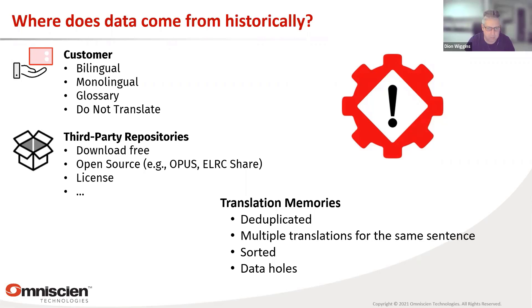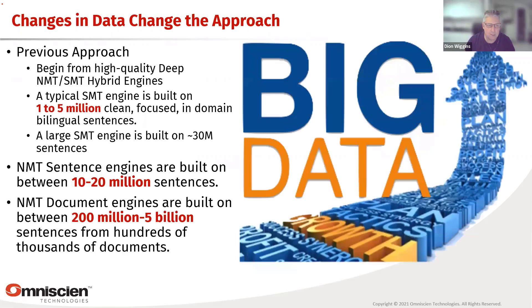Even translation management systems today don't keep things in the sequence they were originally in — they build them into a big body for quick lookup, not for document context. So there's a big problem with translation memories for new document-level translation. Philip explained document-level translation yesterday; please go back and look at his presentation for detail. We need new data. Just a few years ago, a big SMT engine used 1 to 5 million clean sentences, maybe 30 million for a really large one. Today, a typical NMT engine might be trained on 10 to 20 million for small to mid-sized, and maybe 100 million for a large one.